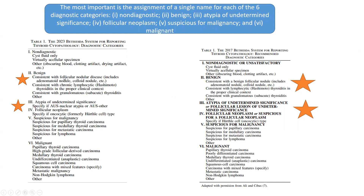Category three of the Bethesda grading for thyroid cytopathology is AUS — atypia of undetermined significance. Compared to the 2017 grading, the terminology of 'follicular lesion of undetermined significance' has been removed. Category three is now just AUS — atypia of undetermined significance. Within this, we should specify if the AUS is nuclear atypia or AUS other, because the risk of malignancy is different in both.